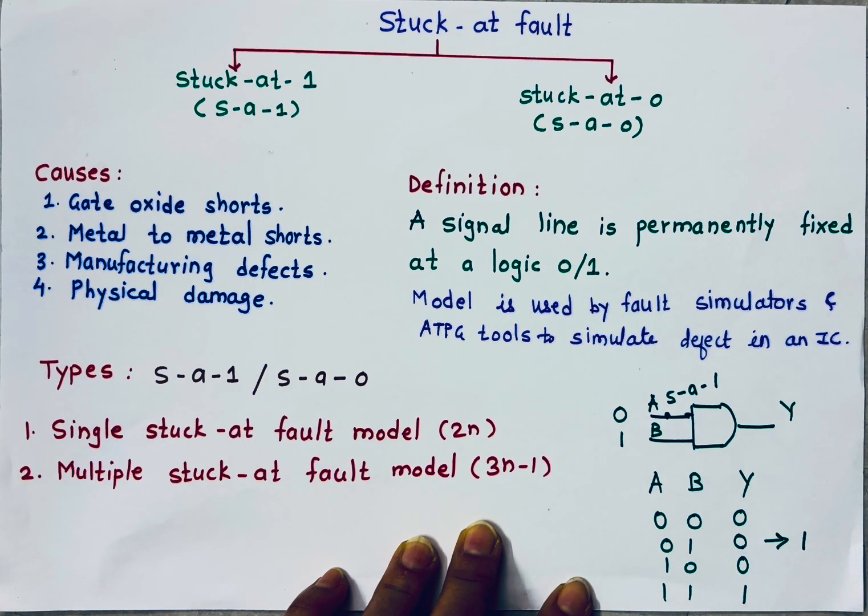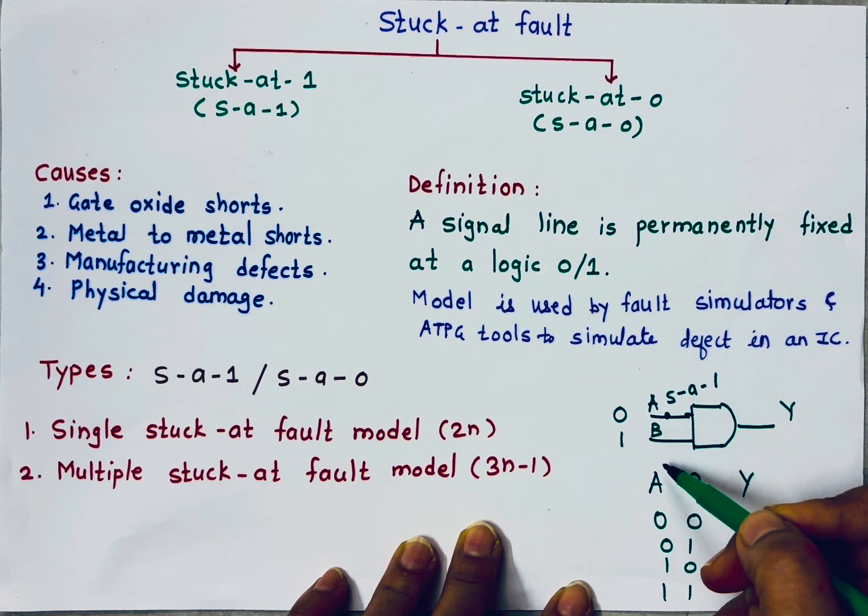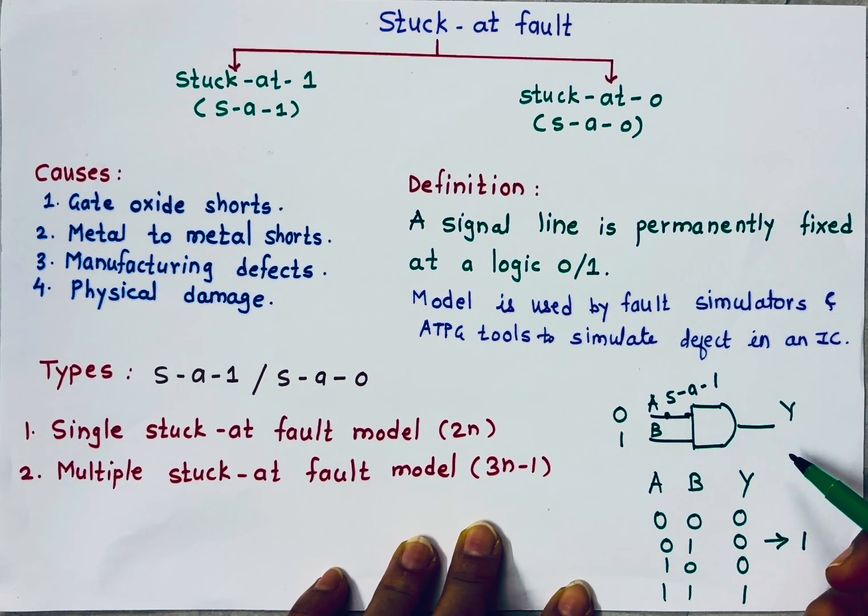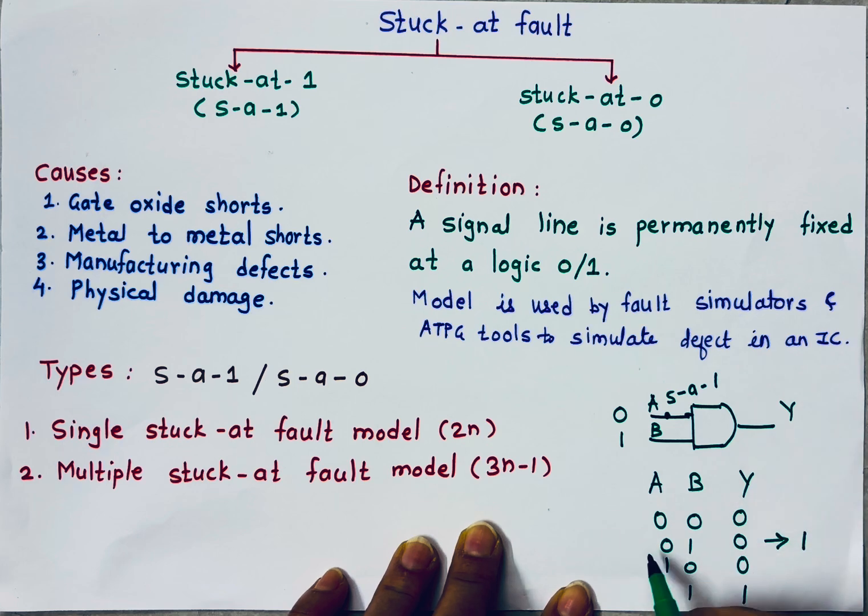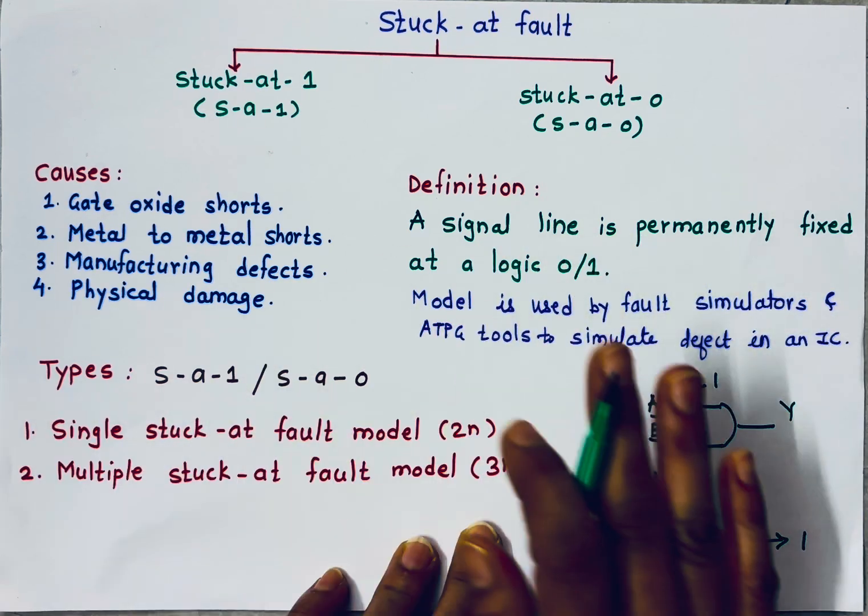Initially, in earlier years, the testing was very simple. They used to apply all the possible inputs. It means, to test this AND gate, they will apply 0,0 and check if output is 0. If it is 0, it is correct. For 0,1 if it is 0, correct. For 1,0 it is 0, correct. For 1,1 it is 1, correct.